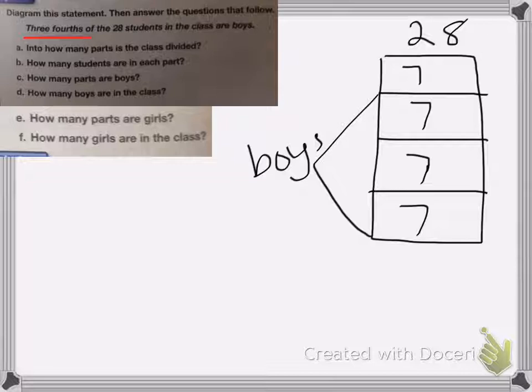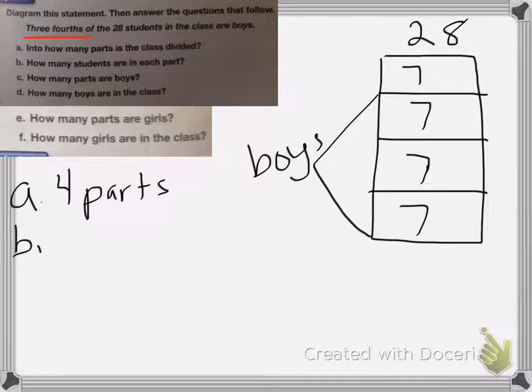So A, how many parts is the class divided? The answer is four. B, four parts. B, how many students are in each part is seven students.